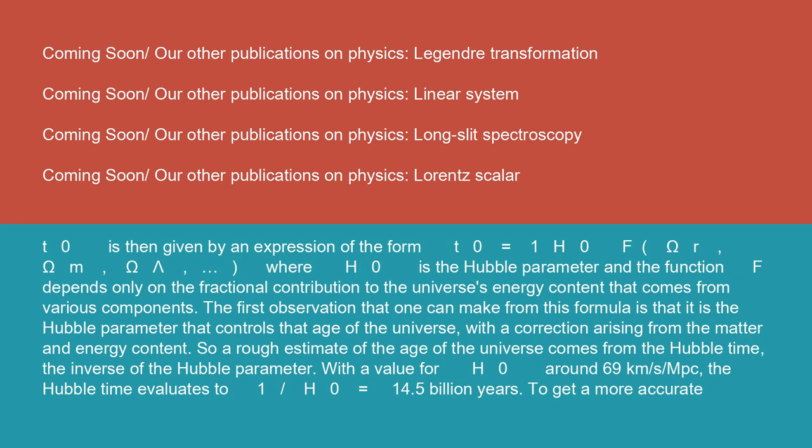The age t0 is then given by an expression of the form t0 equals 1/H0 times f(omega r, omega m, omega lambda).